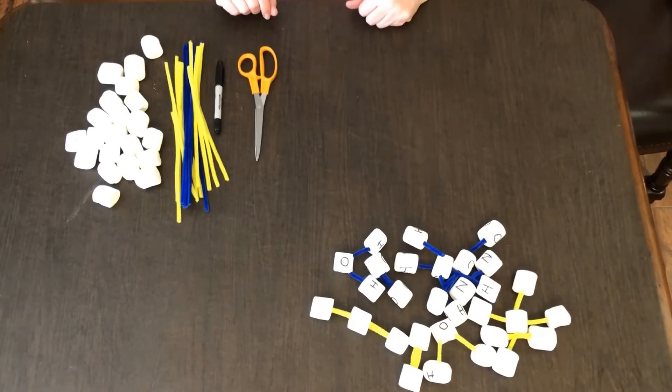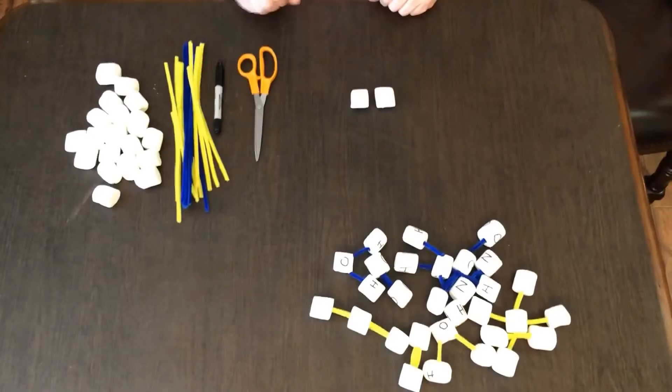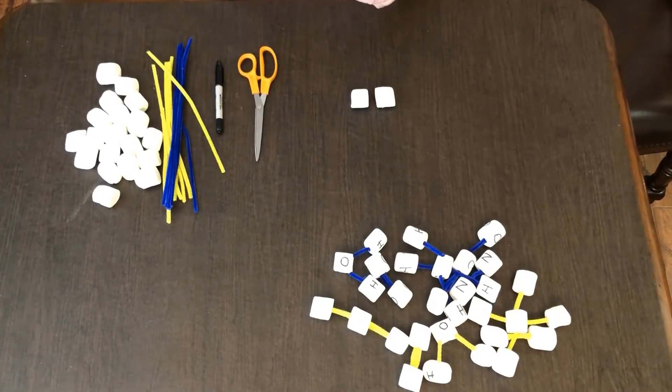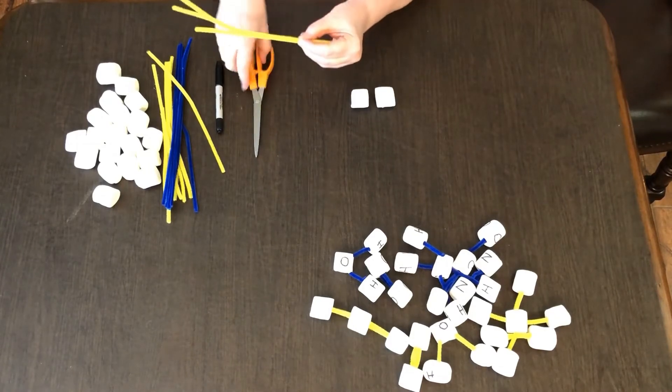You can see I've made some already. Let's make nitrogen. Nitrogen has three pipe cleaners for one bond—you'll see that on the instructions—and they need to be about two and a half inches long.